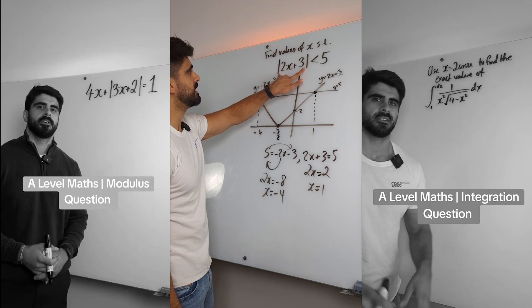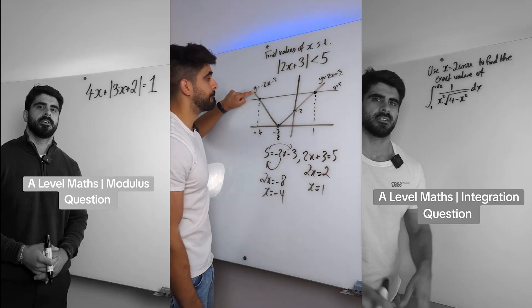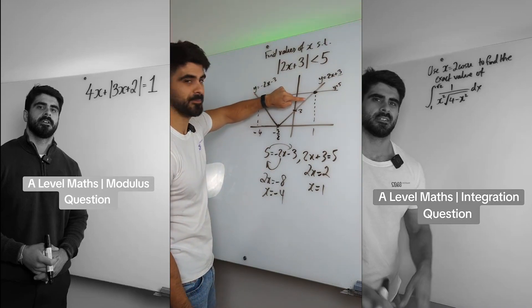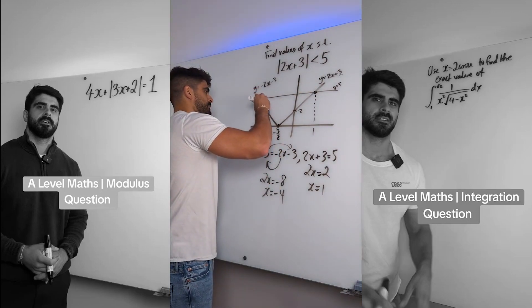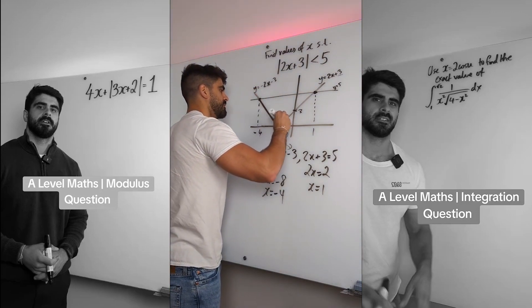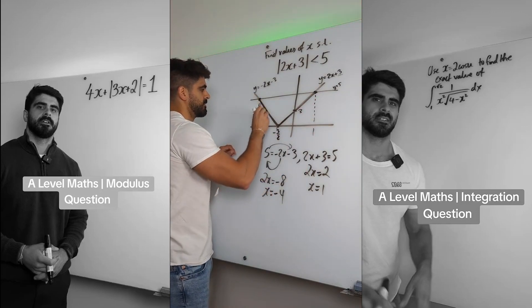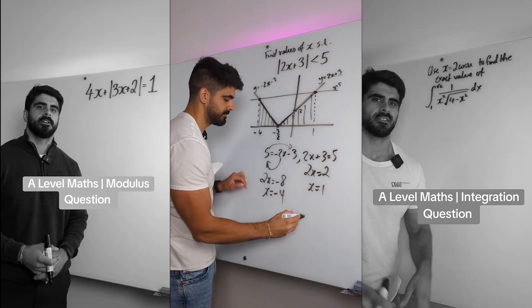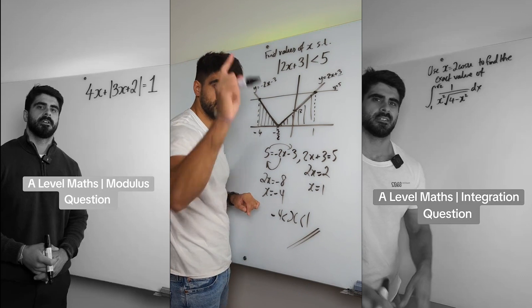What we need to do first is find the x values of where these two graphs meet. So the first one, we're going to say 5 equals minus 2x minus 3. This one is when 5 equals 2x plus 3. We get 2x is minus 8, x is minus 4. Here we get 2x is 2, x is 1. It wants to know when is the v below 5. It's this part here between minus 4 and 1, and it can't equal because of the inequality. Nice.